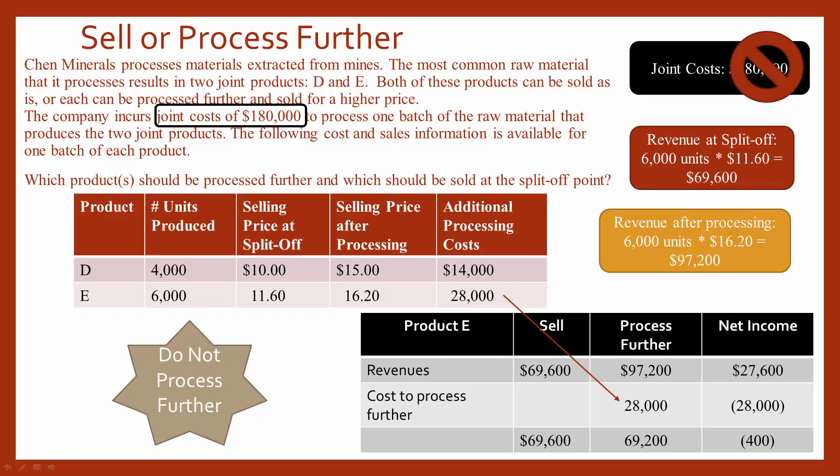So now we've gone through three different types of sell-or-process-further analysis: our single product example, our joint product where we said yes they should process it further, and our joint product where we said no they should not process it further.